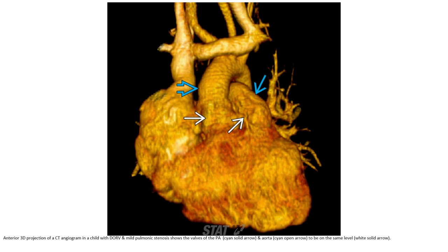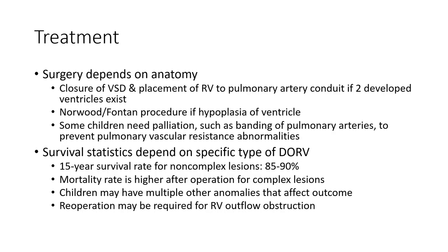An anteroposterior 3D projection of CT angiography in a child with DORV and subpulmonary stenosis shows the valves of the PA and aorta at the same level. Surgery depends on anatomy and includes closure of the VSD and placement of a conduit to the pulmonary artery. If indicated, a Fontan procedure may be performed for hypoplastic or single ventricle anatomy.